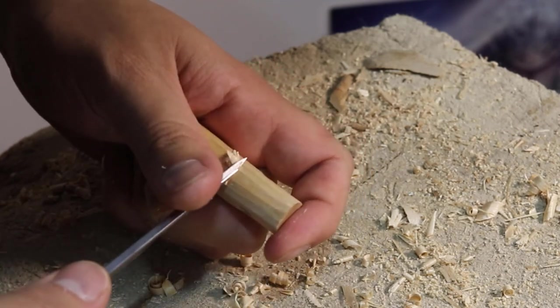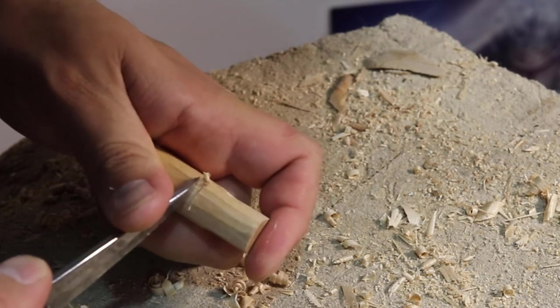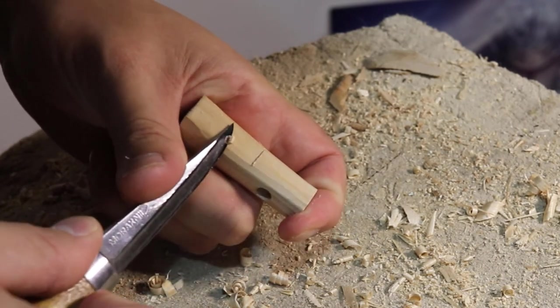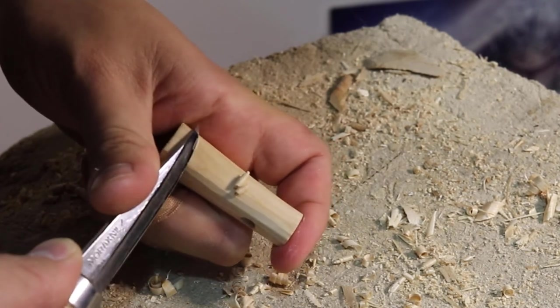Now, using a smaller, dedicated knife for small carvings is probably a lot more ideal than using a larger Mora 106 carving knife like what I'm using here. But I'm very used to using this knife in this way.